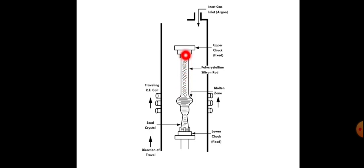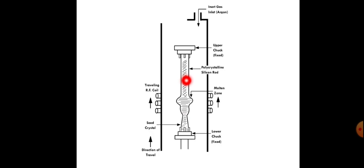This process is repeated. After repeating the process, there are no impurities remaining, and we obtain highly purified silicon with a single crystal orientation — a monocrystalline silicon rod converted from the polycrystalline silicon rod.